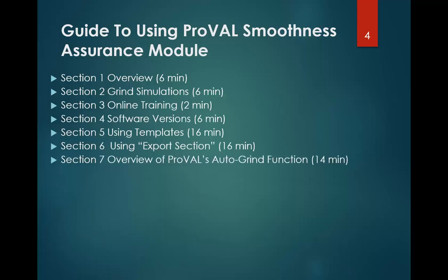Section seven is titled An Overview of ProVal's Autogrind Function. When you develop a grind plan using the ProVal Smoothness Assurance Module, the first step is to use the autogrind function. In version 3.5 it's a button, and in version 3.6 it occurs automatically. It produces an initial list of grind locations the software believes you'll want to use, but in most cases you have to refine that list because it gives you more locations than you actually need. Understanding what the autogrind function is doing is essential to successfully developing a grind plan.